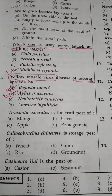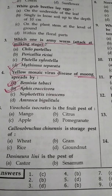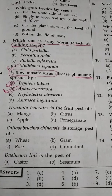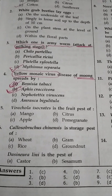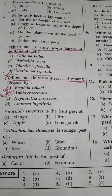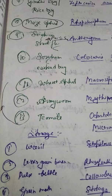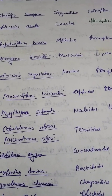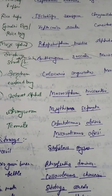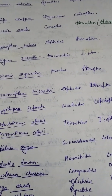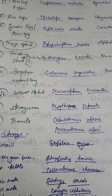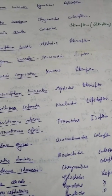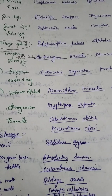Question number 3: Which one is armyworm? Armyworm is a pest of wheat and attacks at the milking stage. The scientific name of armyworm is Mythimna separata. Let's revise the pests of wheat: wheat aphid is Macrosiphum miscanthi, family Aphididae, order Hemiptera. Armyworm of wheat is Mythimna separata, family Noctuidae, order Lepidoptera. Termite of wheat is Odontotermes obesus or Microtermes obesi, family Termitidae, order Isoptera. These three pests of wheat are very important.